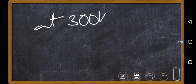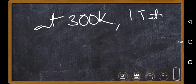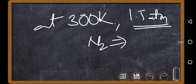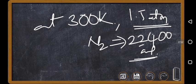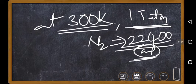So, what type of question they can ask you? They will give you, at 300 Kelvin temperature and 1.5 atm pressure, in this kind of conditions, nitrogen is obtained some 22,400 ml. Then you don't take this volume as it is.